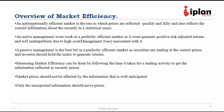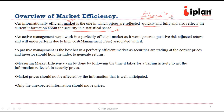A market will be called an informationally efficient market when prices are reflected quickly and fully, reflecting current information about the security. For example, if a share price was $100 and information comes that the company is going to perform well next quarter, and there is a 20% change in expectation, the price moves by 20% immediately. That represents an informationally efficient market. In that case, active management will not work if the market is perfectly efficient, as it will not generate any positive risk-adjusted returns.